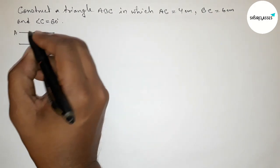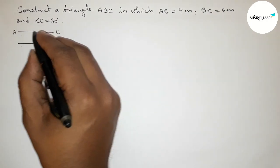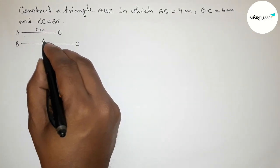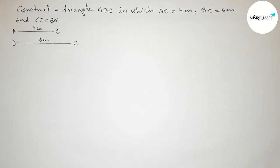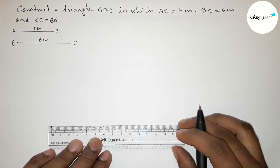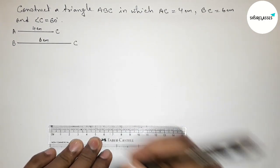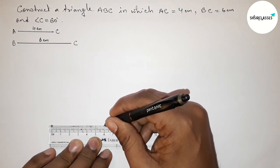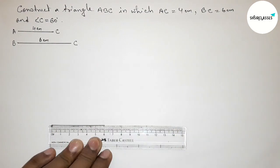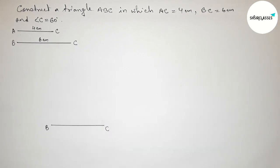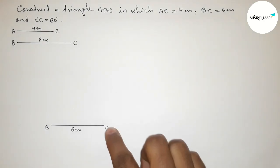So this one is AC equals 4 centimeter and this one is BC equals 6 centimeter. Now we draw the line BC equals 6 centimeter — starting from zero, this is 6 centimeter. Taking point B here and point C here, so BC equals 6 centimeter.